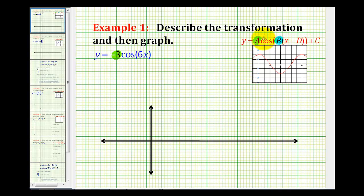And b is equal to six, which will affect the period. So the amplitude is equal to the absolute value of a, so we have the absolute value of negative three, so the amplitude is equal to three.